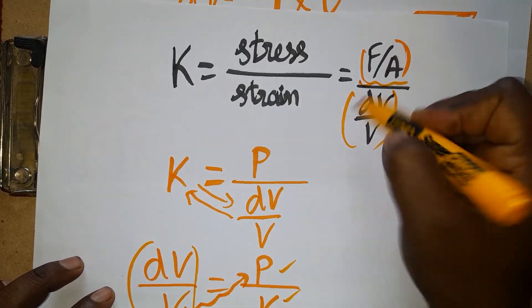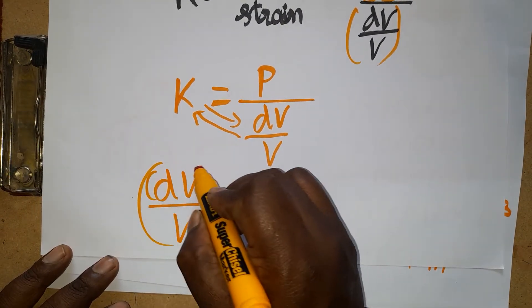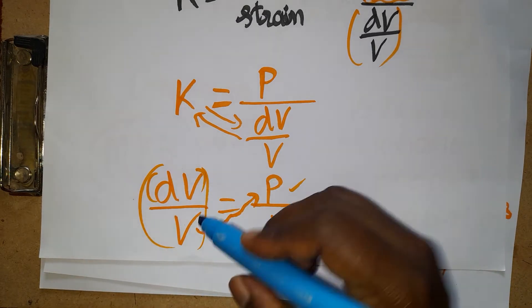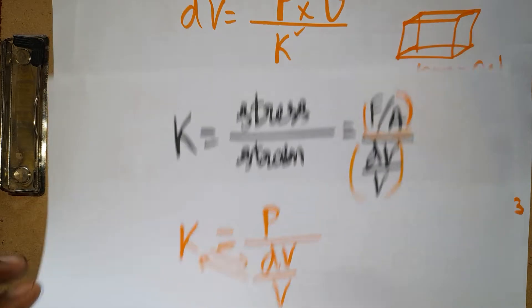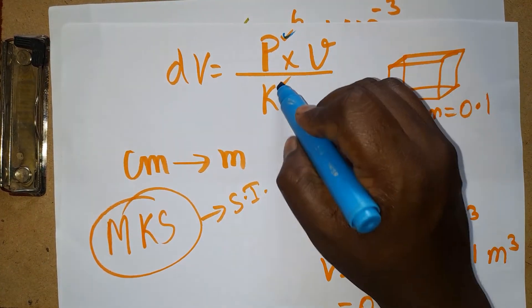dV/V is equal to P/K. P is pressure, K is bulk modulus. Instead of writing force per unit area, you can write pressure. Now I want the changing volume. If you want changing volume, take original volume to that side. The formula is ready: dV = PV/K.